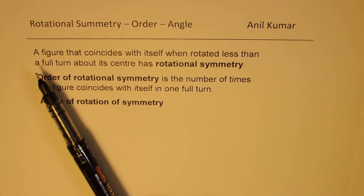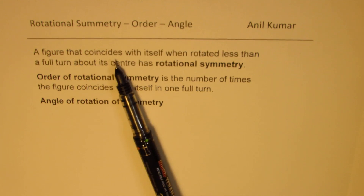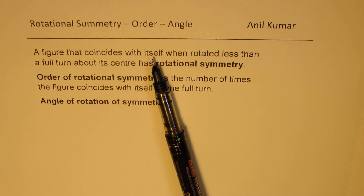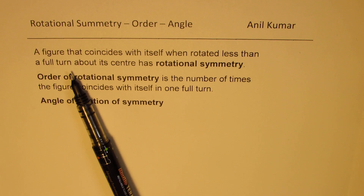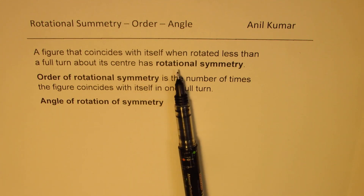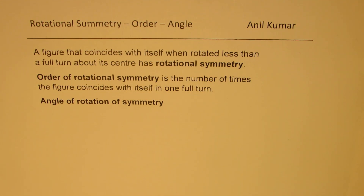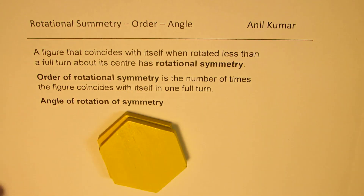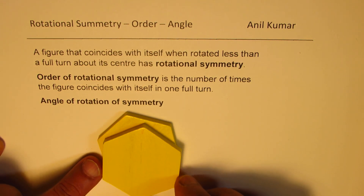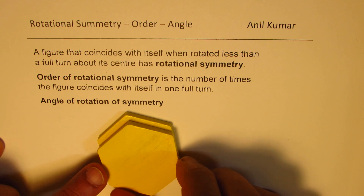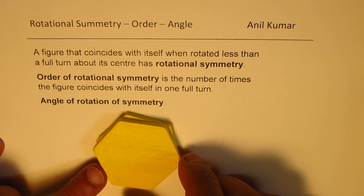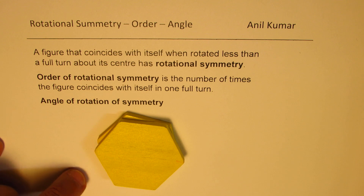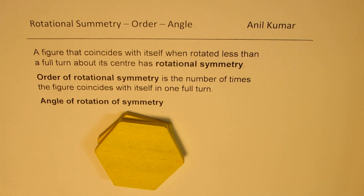A figure that coincides with itself when rotated less than a full turn about its center has rotational symmetry. Figures like a hexagon — if I rotate it, you can see it will coincide with itself after some rotation. So this figure has rotational symmetry.